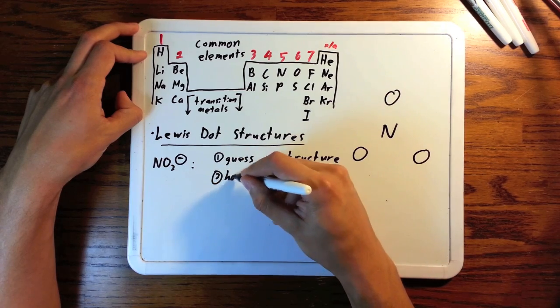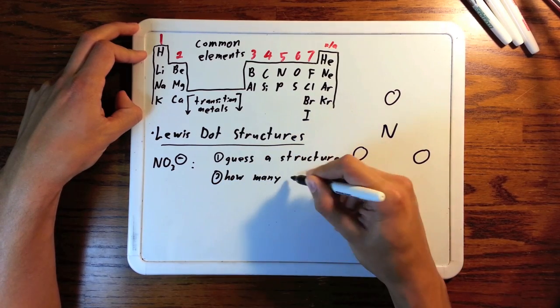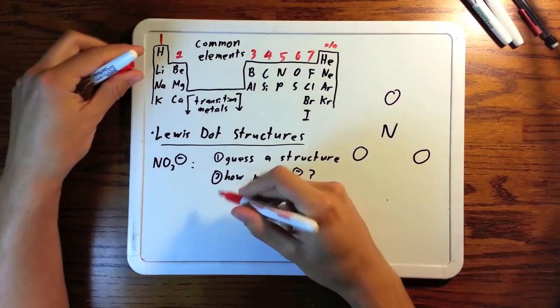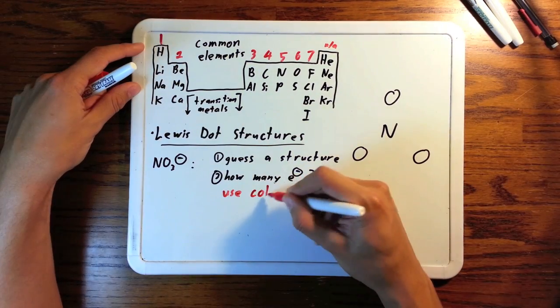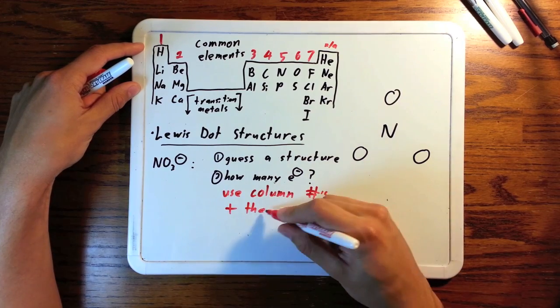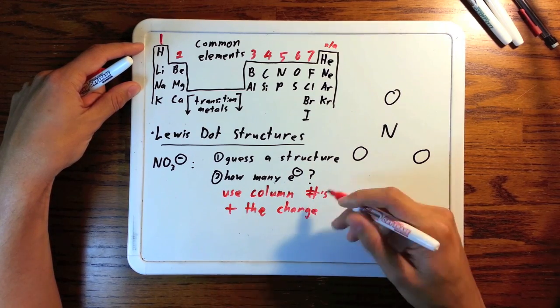Second step, how many electrons does this molecule have? To figure that out, look at each element, find it in this periodic table, go to the top of the column, and add that number. Add them all up, and then add any charge on this.